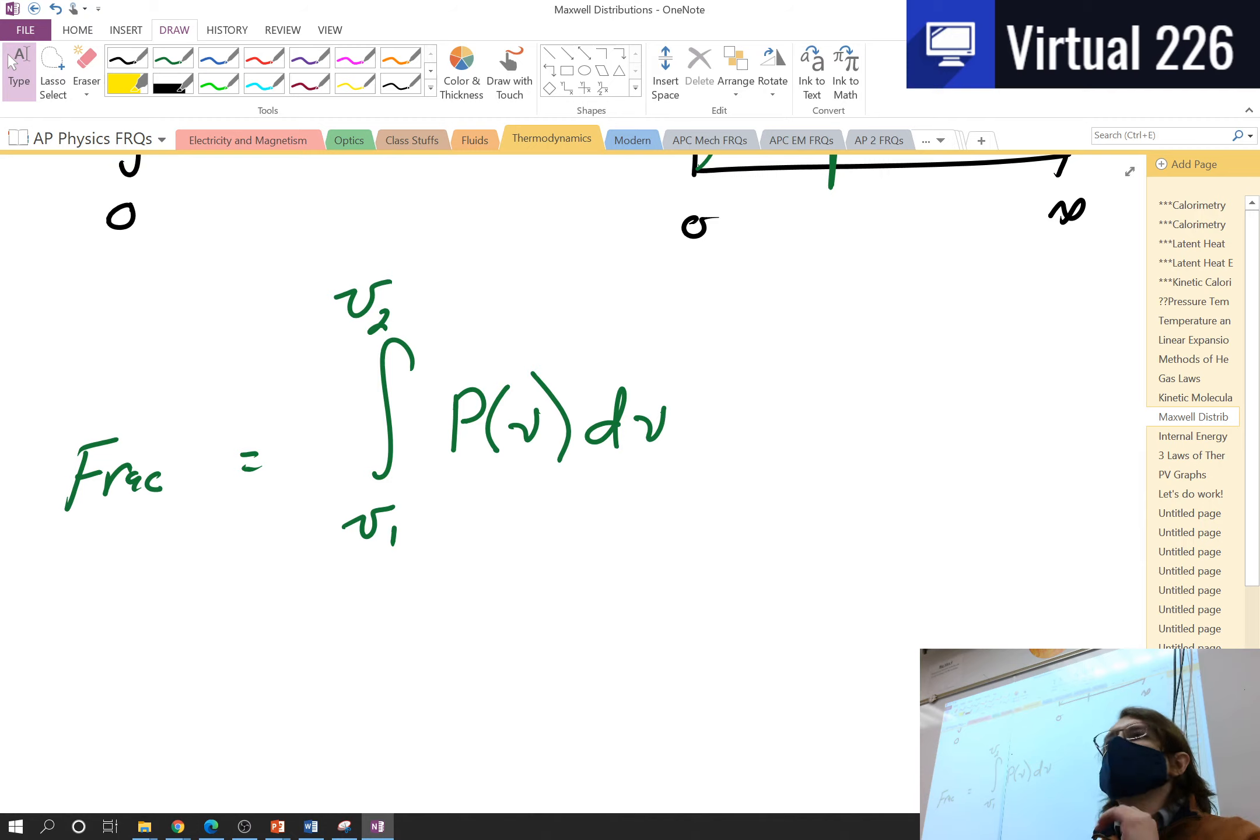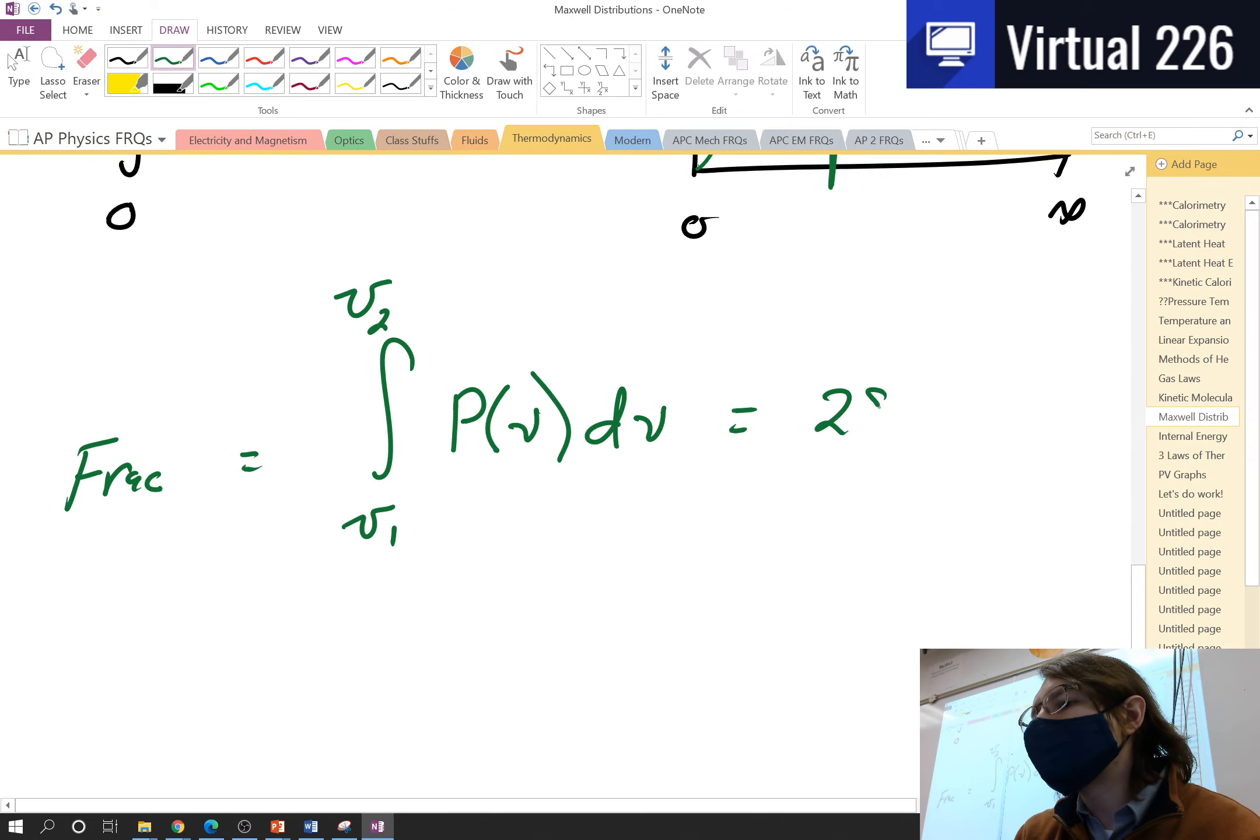This would give you the fractional percentage or the fractional amount that you could just turn into a percent of what quantity of that normalized function is within that boundary. So maybe you run this and you get something like 28 percent or 0.28.